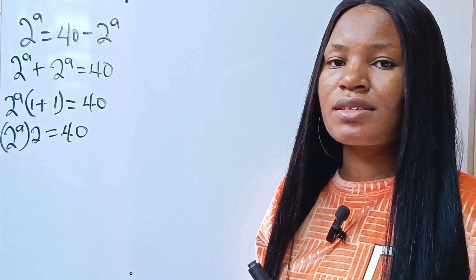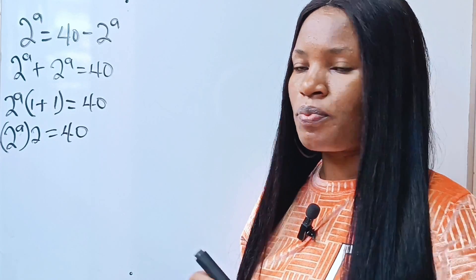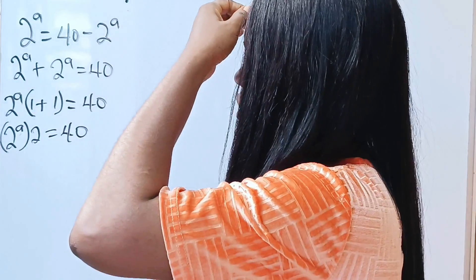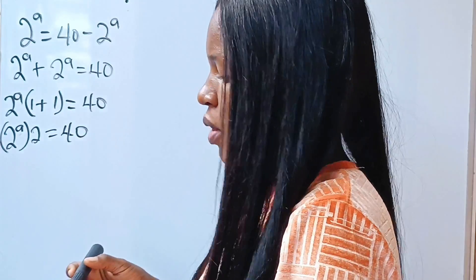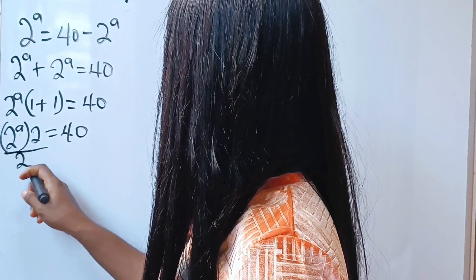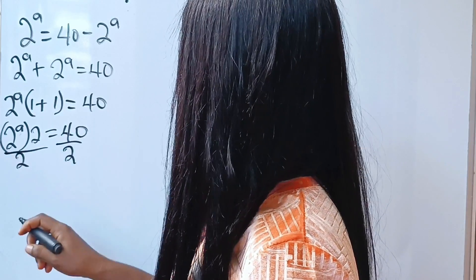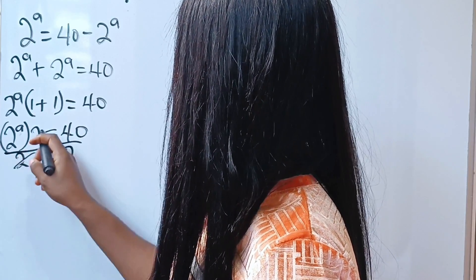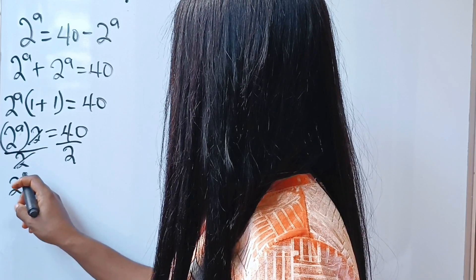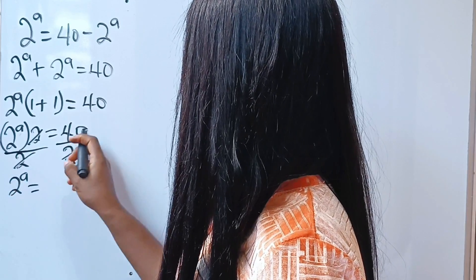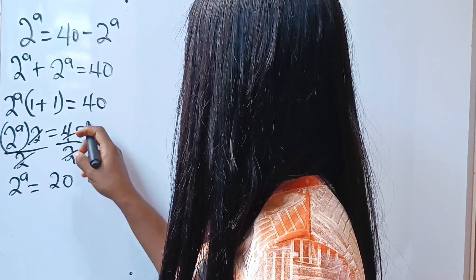Now to simplify this, let's divide through by 2. So if we divide through by 2, we divide these 2 and we have that 2 to the power of a is equal to 20.